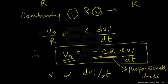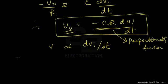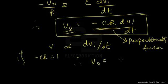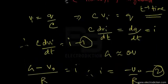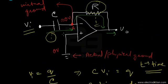Here −CR is the proportionality factor. If −CR equals one, then the output voltage equals the derivative of the input voltage. Using this circuit we can obtain the derivative of any kind of input signal applied at the inverting input of the op-amp. That concludes circuit number one — the differentiator.